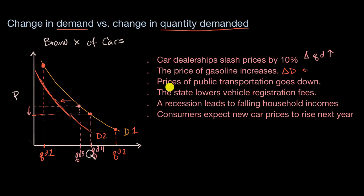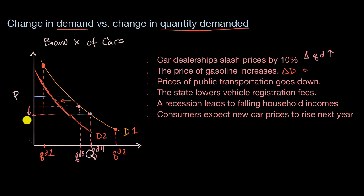What if prices of public transportation go down? Is this a change in quantity demanded, or would it shift the demand curve? Again, for any given price we're talking about, the substitute — public transportation — is now looking more favorable. So at a given price, the market will just not demand as much quantity. This would again be a change in the demand curve. When something is true for any given price along the curve, you know you're going to be shifting the curve — and this change in demand would shift to the left.